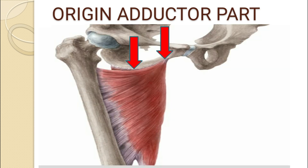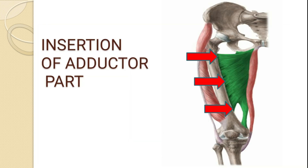The origin of the adductor part of the adductor magnus muscle is from the ramus of the ischium and the lower part of the inferior ramus of the pubis. Please note the highlighted area in the diagram — this is the origin of the adductor part of the adductor magnus muscle.